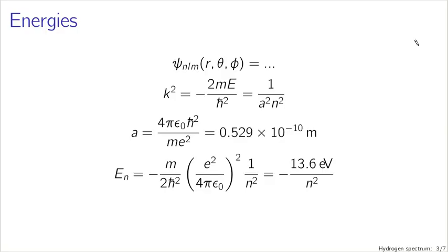Our discussion of the time-independent Schrödinger equation in 3D, separated in spherical coordinates — as appropriate for a spherically symmetric potential of a charged particle orbiting a nucleus — gave us psi with three quantum numbers: n, l, and m. The radial part is given by the associated Laguerre polynomials, and the angular part is given by the spherical harmonics.